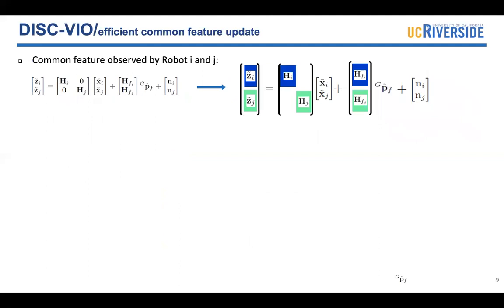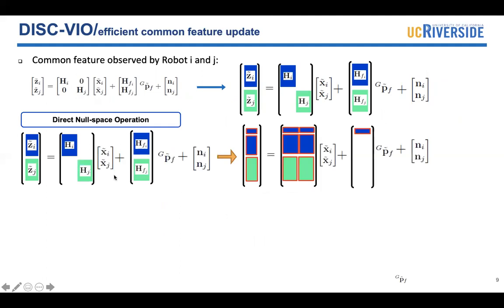Consider a common feature observed by robot I and robot J. This feature measurement is dependent on the features global position. To get rid of the dependency, we have one choice to directly perform null-space projection on the system. And we only need the subsystem in the blue boxes. And we can use this in our CI-EKF to update the robot I's state.